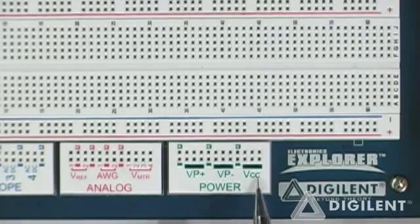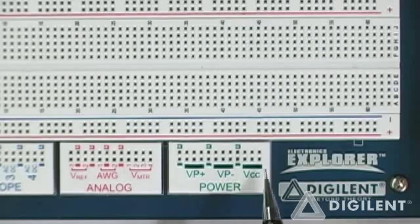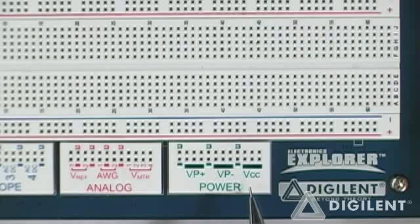I also have a fixed voltage supply, Vcc. It can put out either a constant 5 volts or a constant 3.3 volts. All of these power supplies have significant currents available to them, up to 1.5 amps.